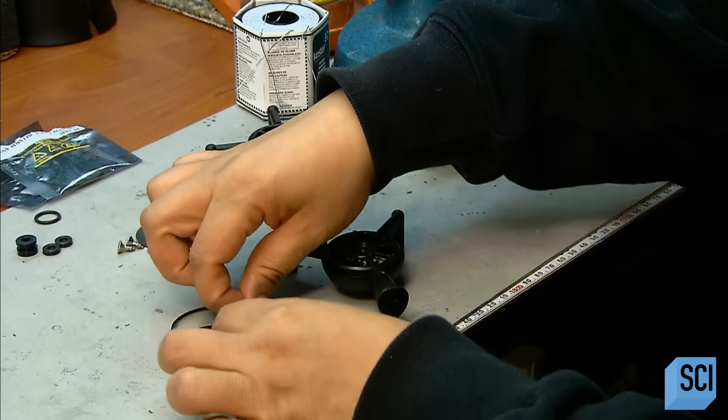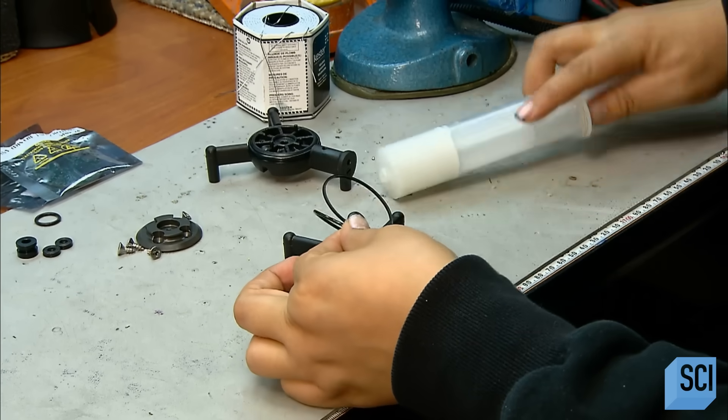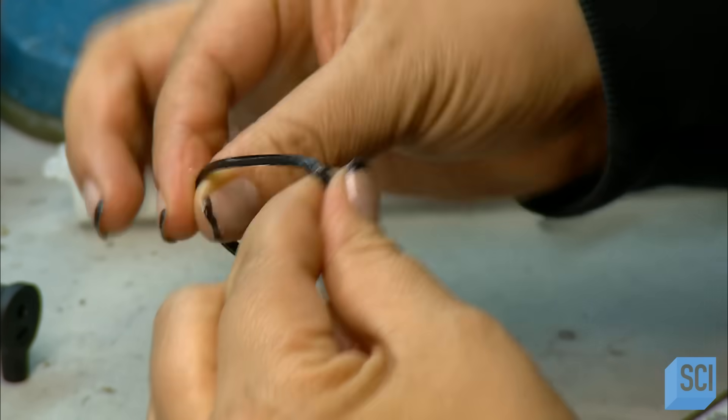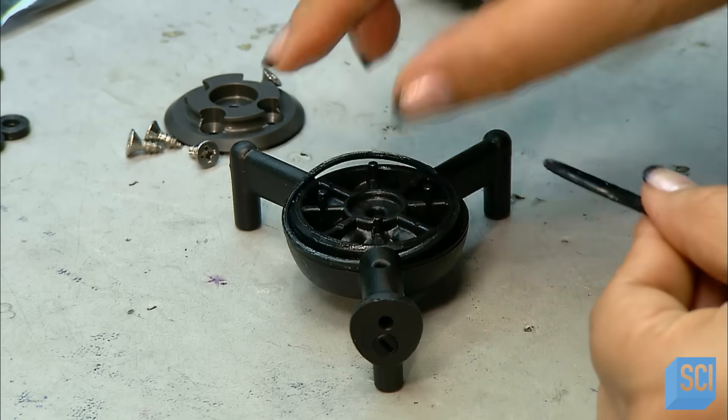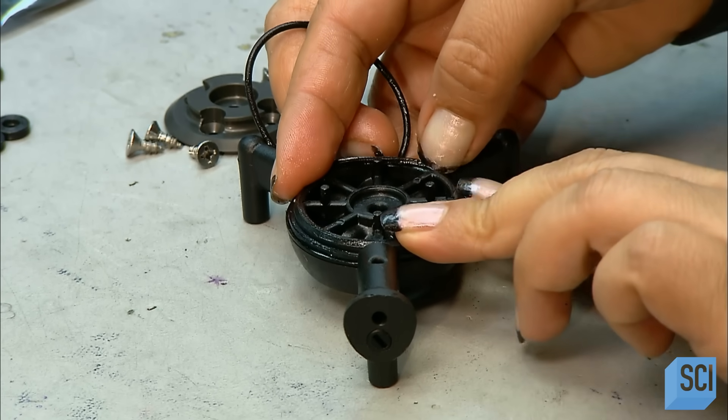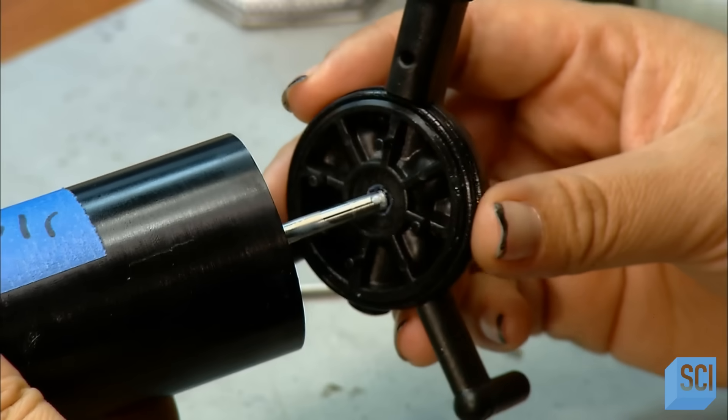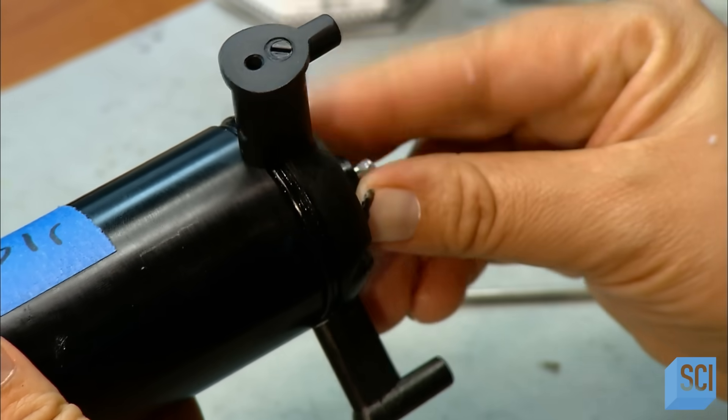Several thrusters propel the robot through the water. For each one, technicians grease then position a pair of o-rings onto end caps that they install on each end of the thruster housing. The o-rings seal the end caps, keeping water out of the motor located inside the housing.